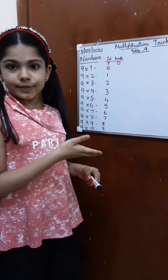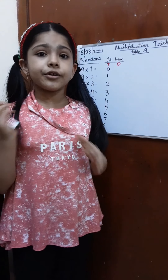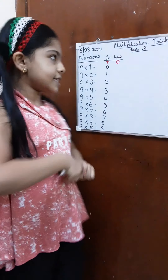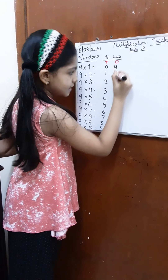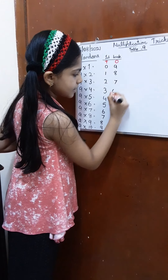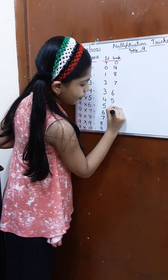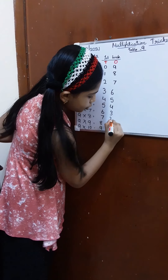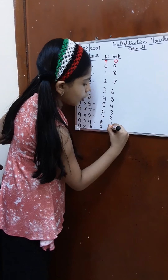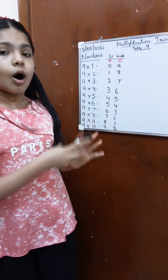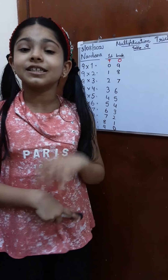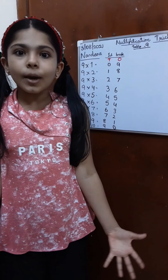Now for the 1st place, we are going to write the numbers backward from 9 till 1 and followed by a 0. So let's write that: 9, 8, 7, 6, 5, 4, 3, 2, 1, and then followed by a 0. There we go — we got the multiples of 9 very quickly.